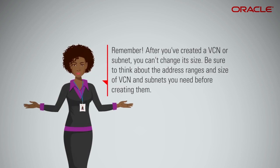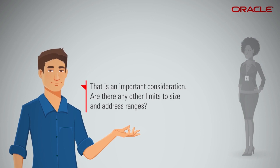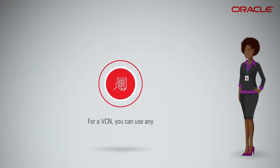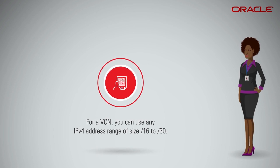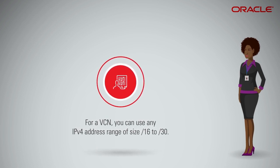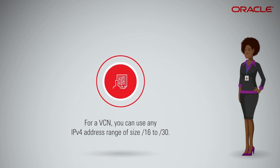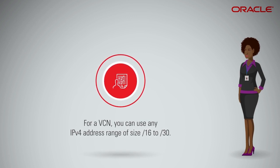Remember, after you've created a VCN or subnet, you can't change its size. Be sure to think about the address ranges and size of VCN and subnets you need before creating them. For VCN, you can use any IPv4 address range of size slash 16 to slash 30 within a subnet's address range. The service reserves the first two IP addresses and the last one.